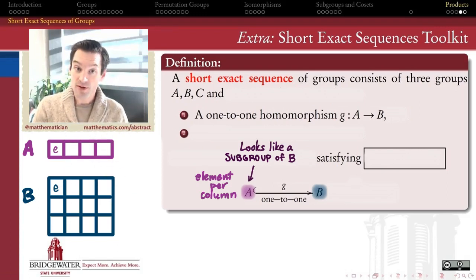Notice that we don't necessarily require this function to be an isomorphism, because in general, this group here in the middle B might not be in one-to-one correspondence with all the elements of A.